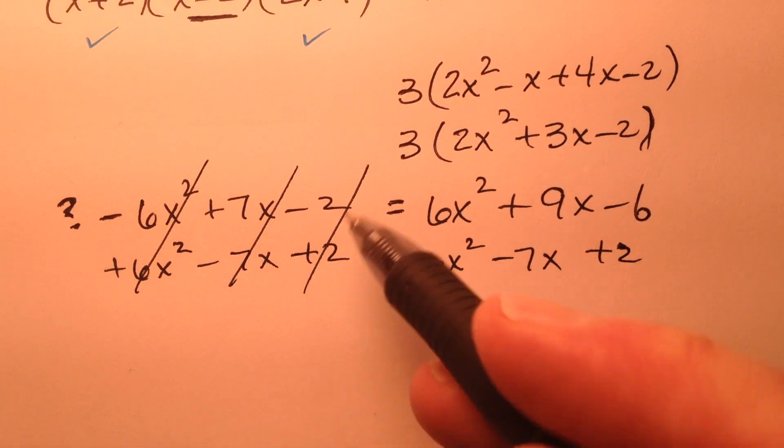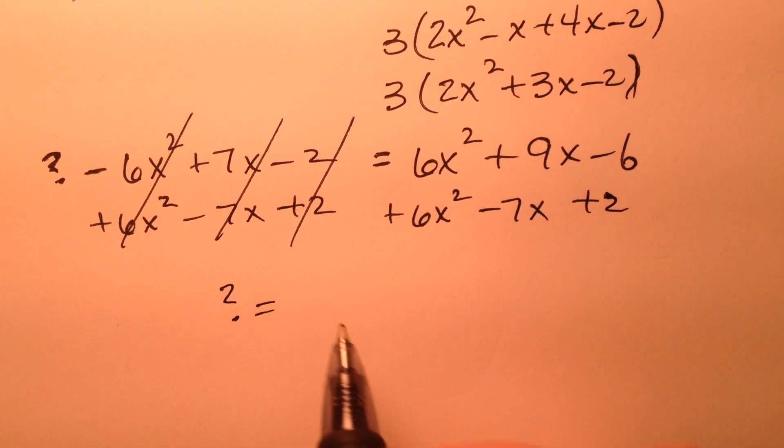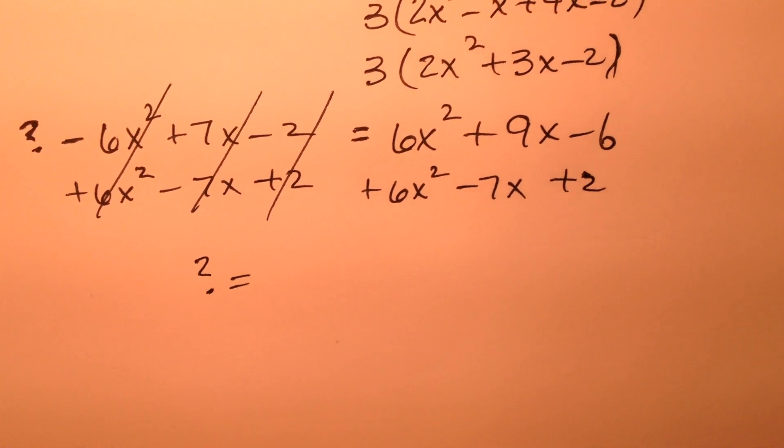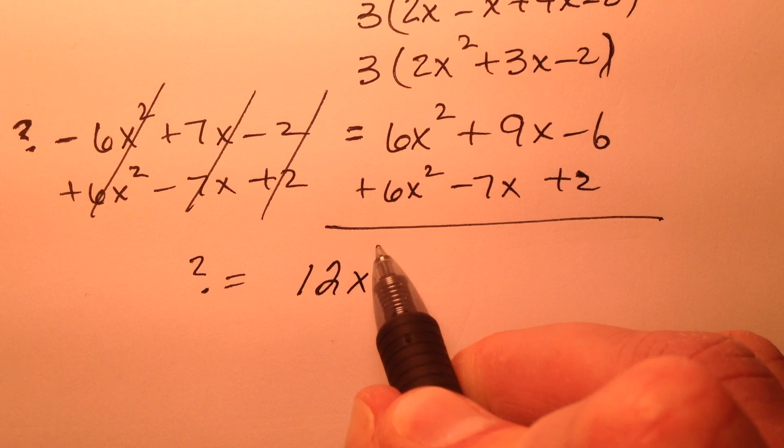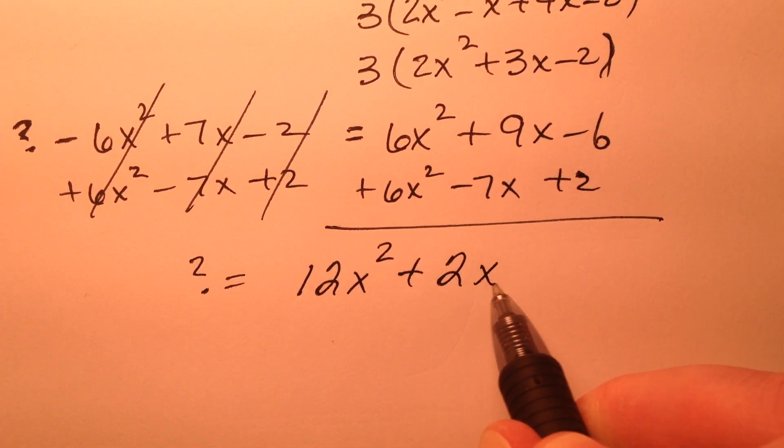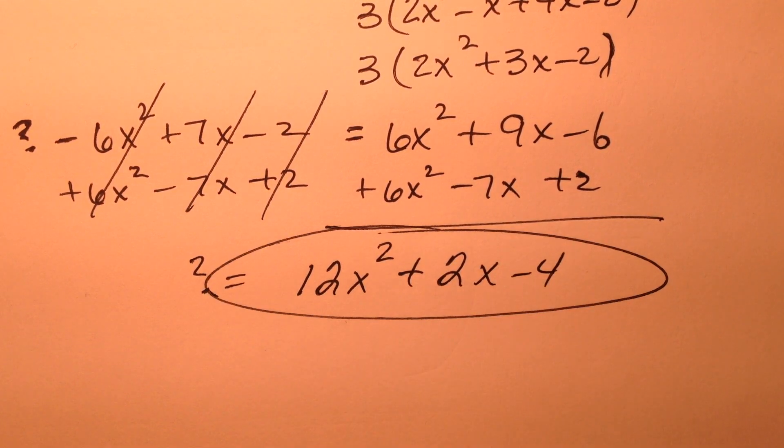So cancel, cancel, cancel. And that question mark that I wasn't sure what polynomial that represented, I'm ready to get it now. So 12x squared plus 2x minus 4, and that is the missing polynomial.